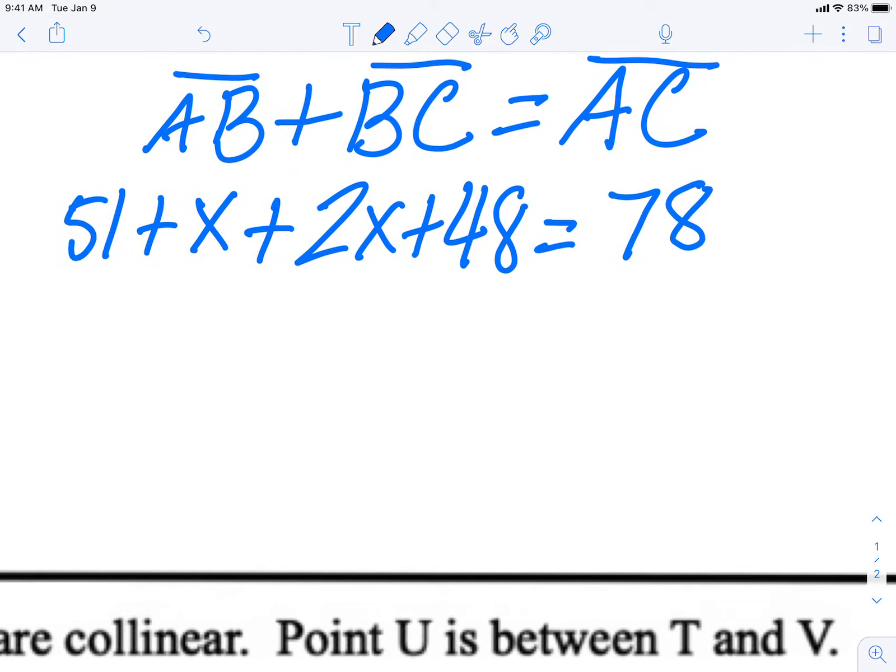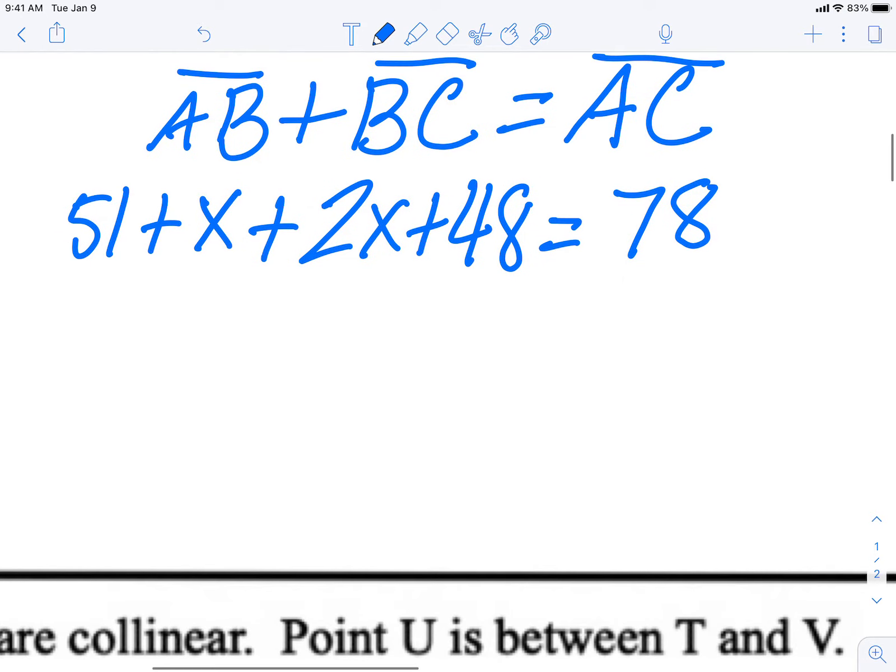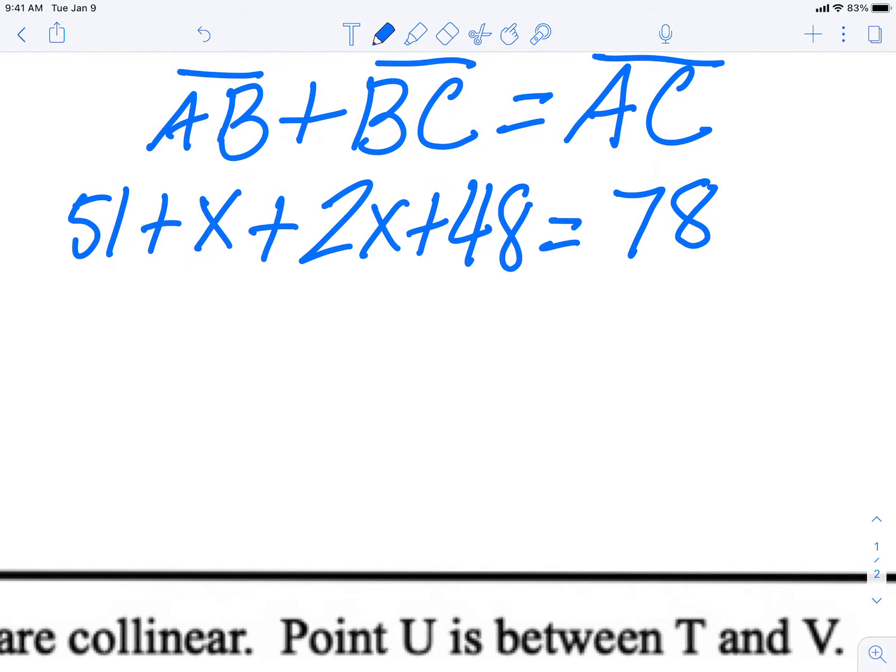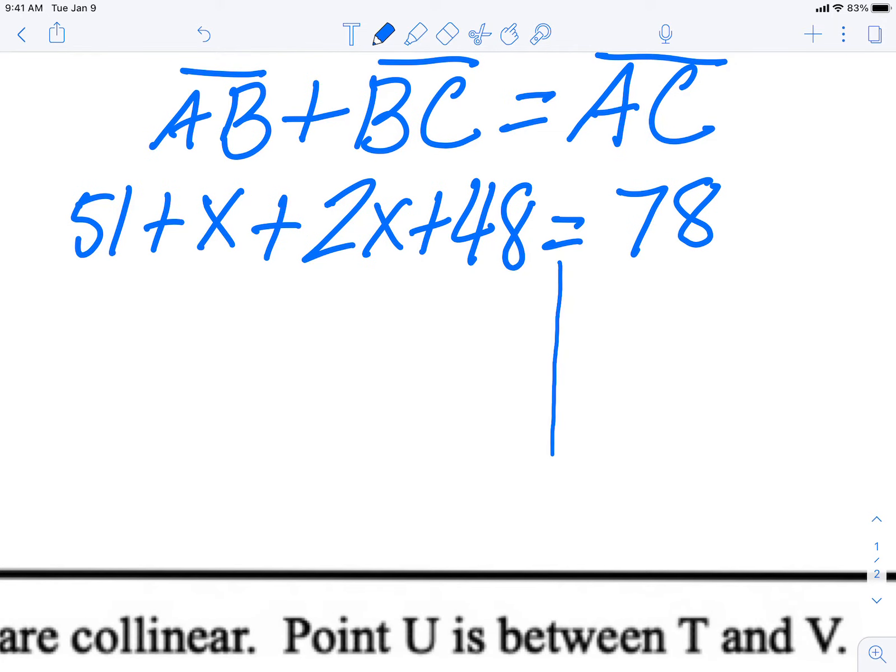So finally they give us AB is equal to 51 plus x. So AB is equal to 51 plus x. What we're going to do here is we're going to solve for x. So we draw our line of separation, we draw our equal. I know that these x's here are together, so I'm going to write them together: x plus 2x. I know that 51 and 48 are together.